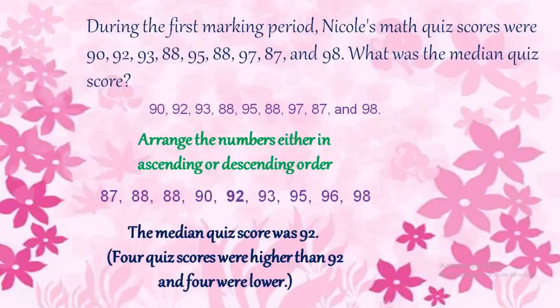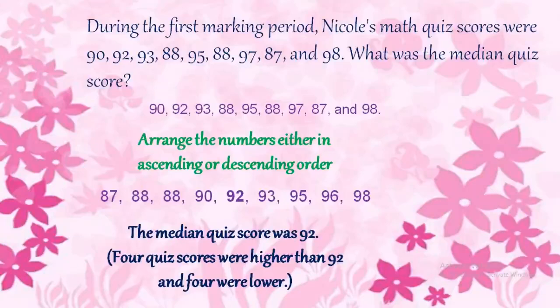What was the explanation? Four quiz scores were higher than 92 and another four were lower than 92. So, the median score is 92.